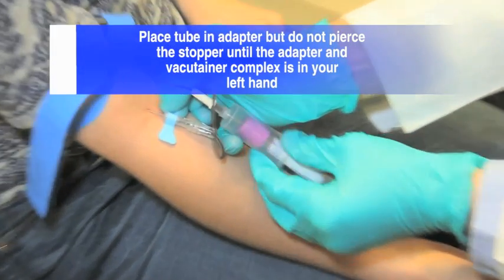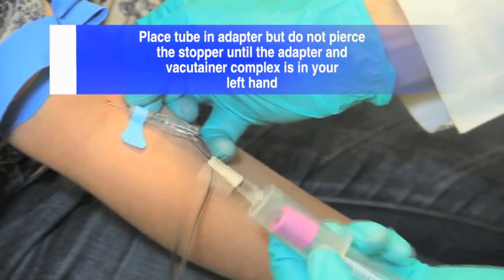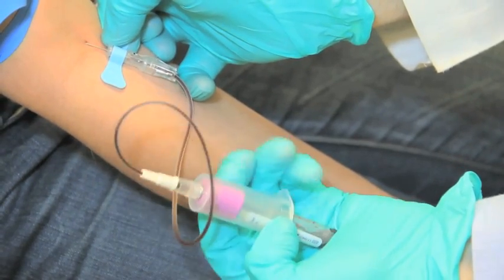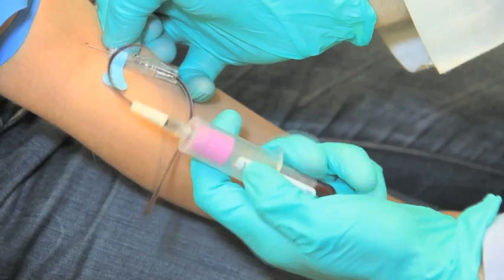Place the next vacutainer gently in the adapter, but do not pierce the seal yet. Doing so requires force and will dislodge the needle from the vein. Instead, grasp the loose adapter and vacutainer complex in your left hand and pierce the stopper to fill the tube. Repeat these steps for the remaining vacutainers that need to be filled.